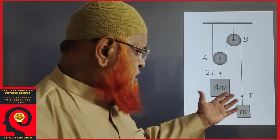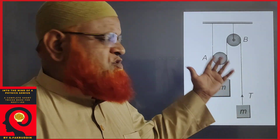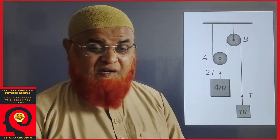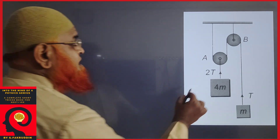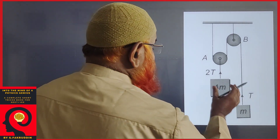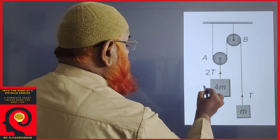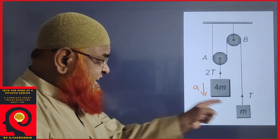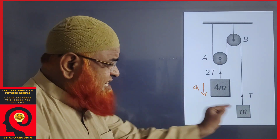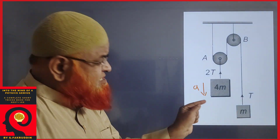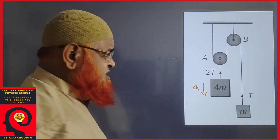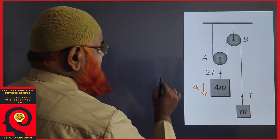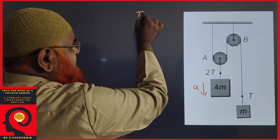My dear students, how can you find out the acceleration of these two blocks? Let us discuss. First of all, let us imagine that this is a heavier block — it comes down with an acceleration. Then what is the acceleration of this smaller block? Let us see. To find that, you should take one identity.